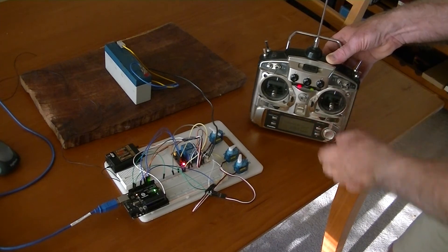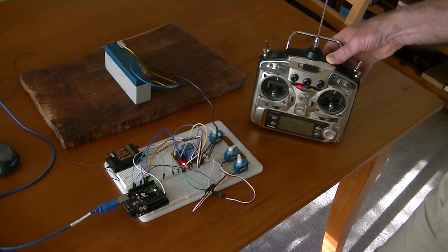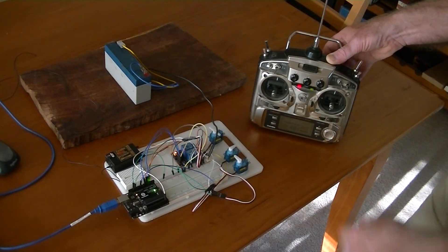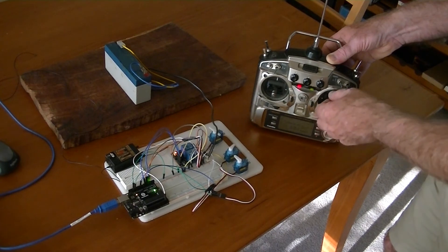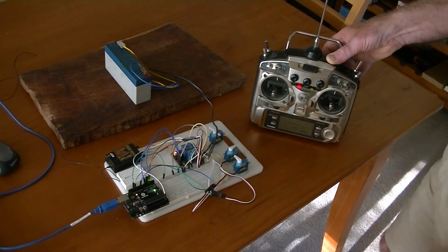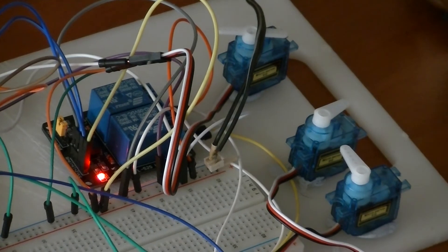So when I turn the knob back to normal position, the retract servo turns on, very, very slowly opens out. And as soon as it gets to the desired position, it turns off and the hydroplane turns on.